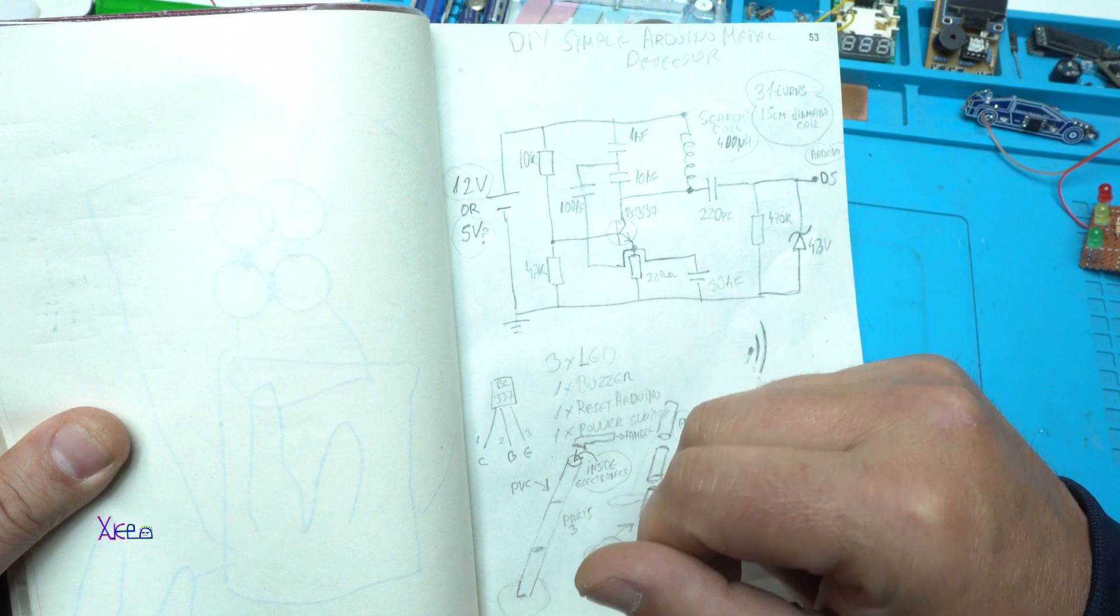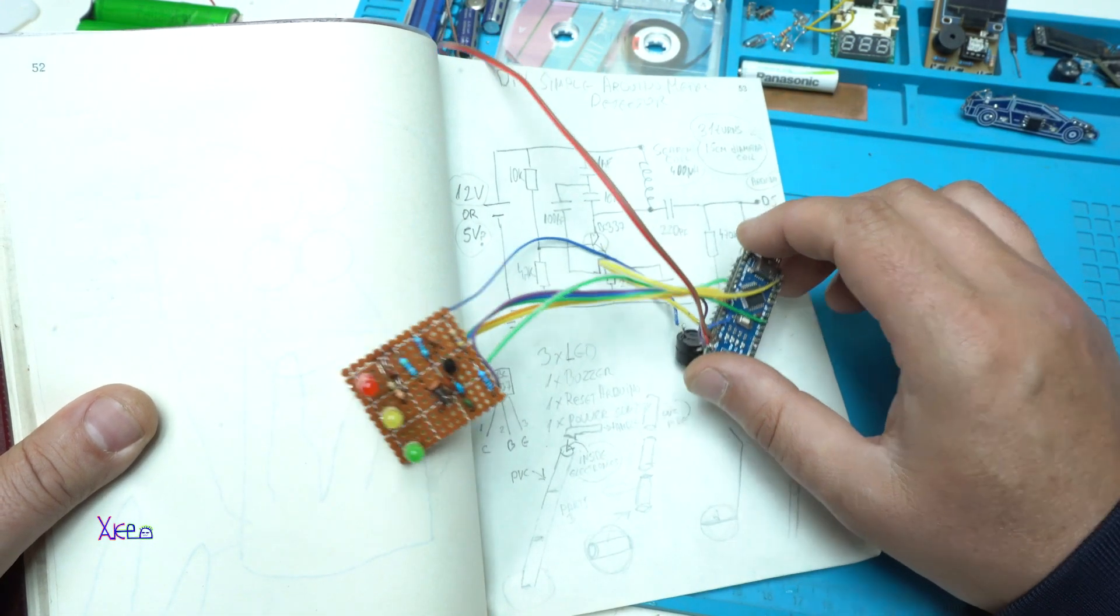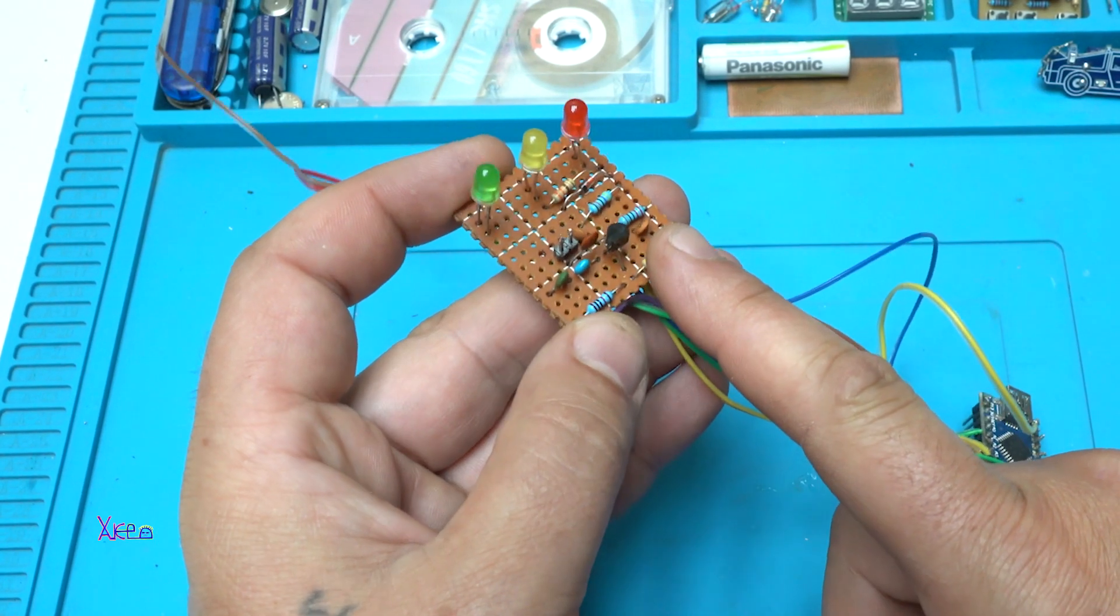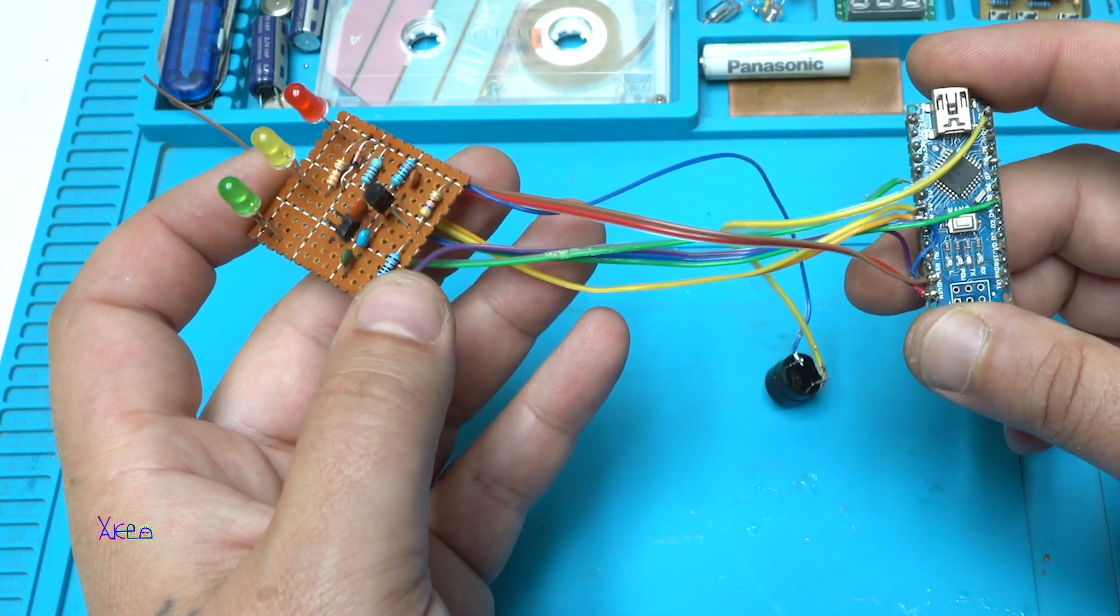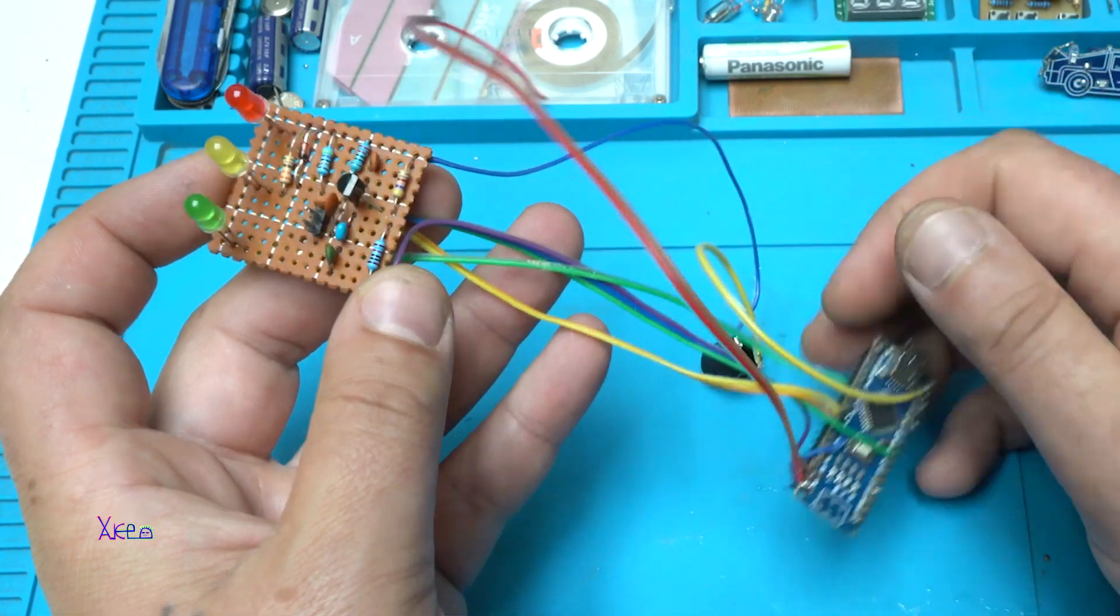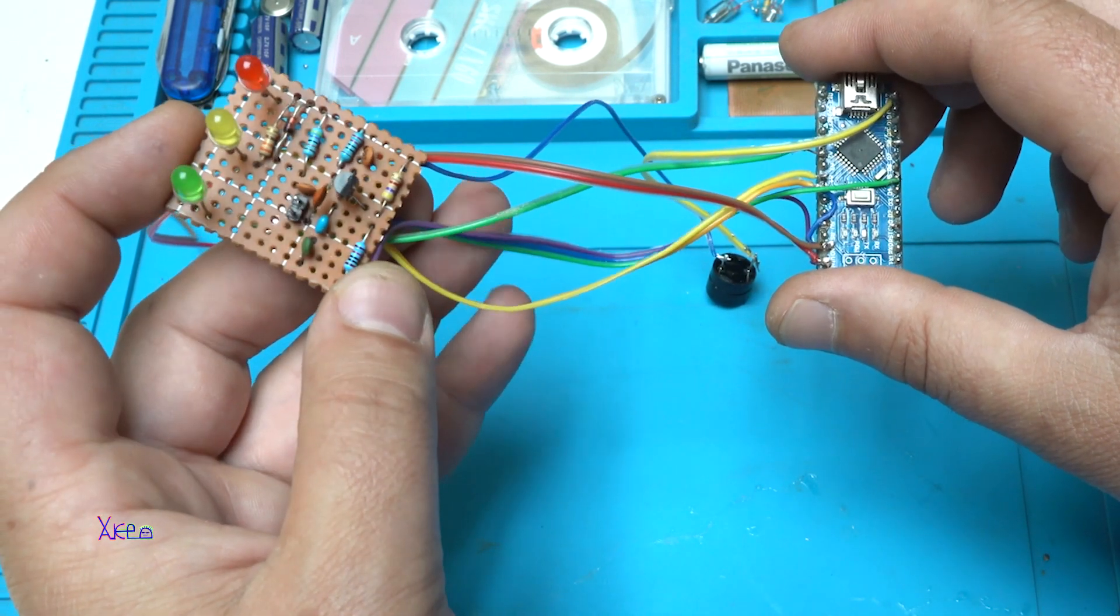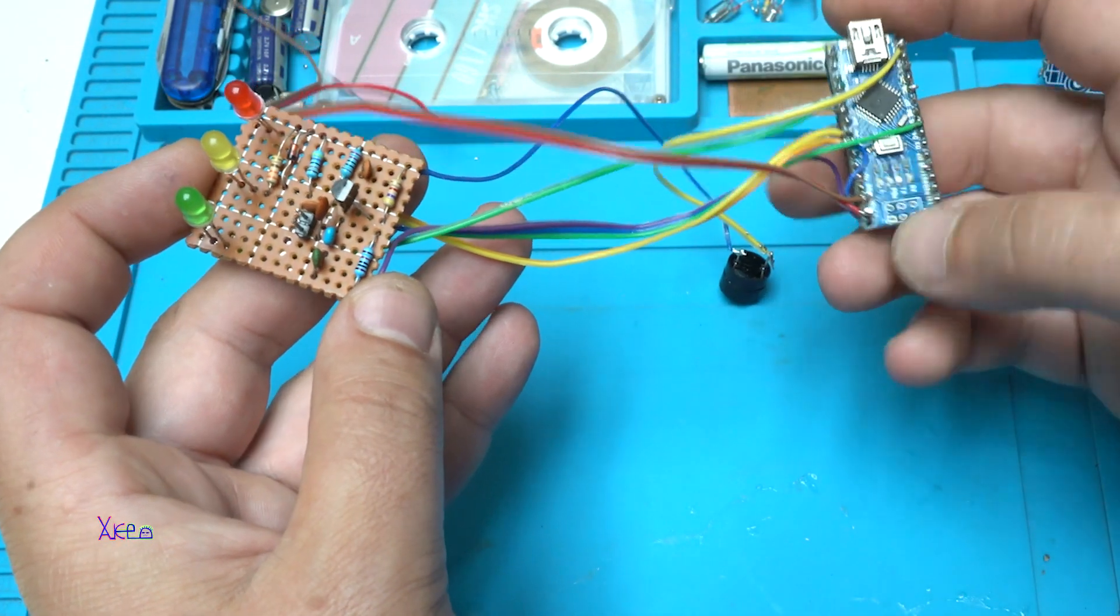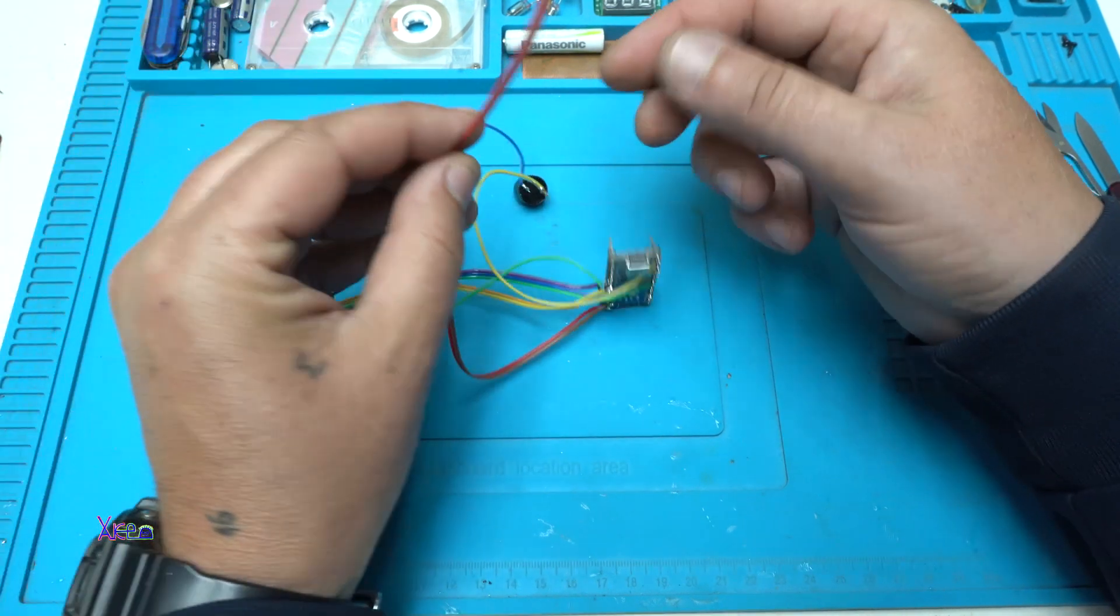Here they are, two boards connected together. This is the homemade oscillator with one transistor and this is the Arduino board. Digital pin number 5 is connected to the oscillator, digital pin number 12 is connected to the buzzer. Analog pins 2, 4, and 5 are for the LEDs. The grounds from the Arduino board and oscillator should be connected together.